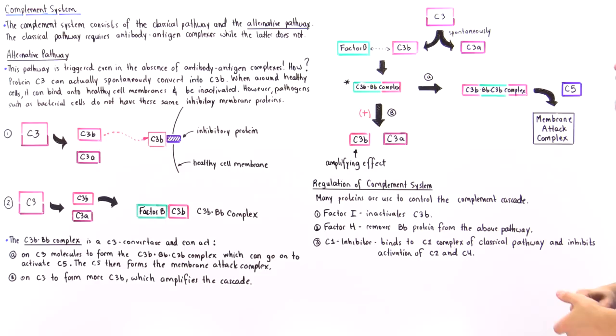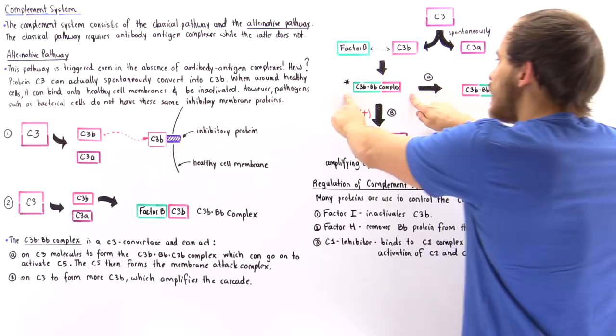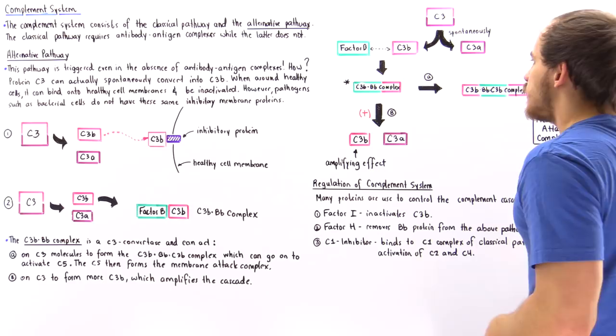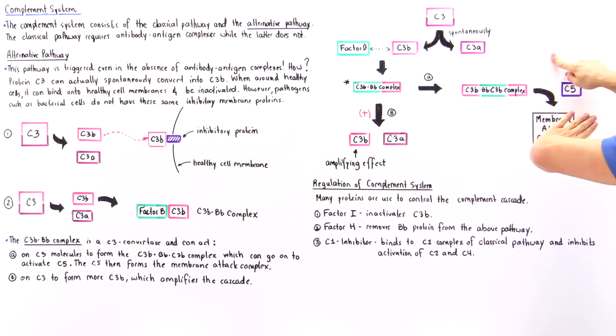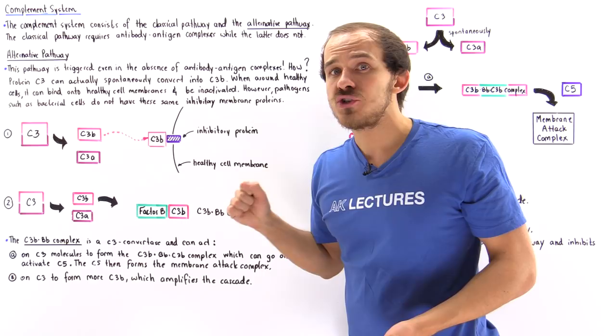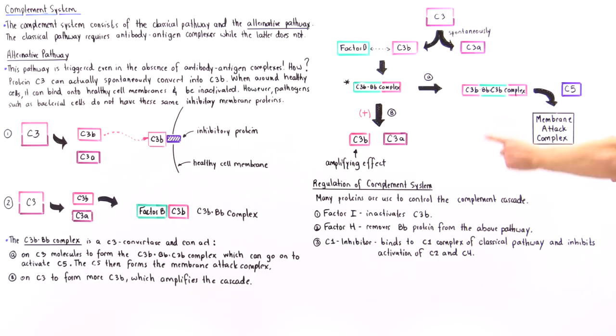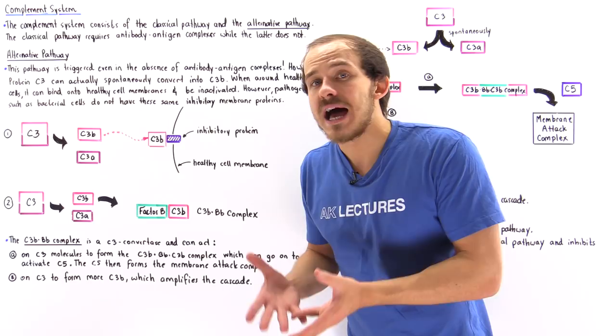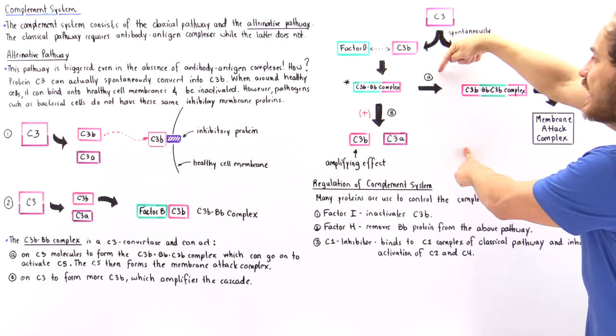Now this complex can do one of two things. It can once again react with another C3, forming more C3b and C3a, and then combine with another C3b to form the C3b-Bb-C3b complex. This molecule can then go on to activate the C5 protein. And remember from our classical pathway discussion, it is C5 that is responsible for essentially building the membrane attack complexes.